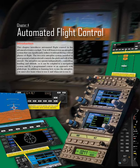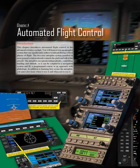Chapter 4: Automated Flight Control Introduction. This chapter introduces automated flight control in the advanced avionics cockpit. You will learn to use an autopilot system that can significantly reduce workload during critical phases of flight. The two-axis autopilot system installed in most general aviation aircraft controls the pitch and roll. The autopilot can operate independently, controlling heading and altitude, or it can be coupled to a navigation system and fly a programmed course or an approach with glideslope. You must also learn when to use it and when not to use it.